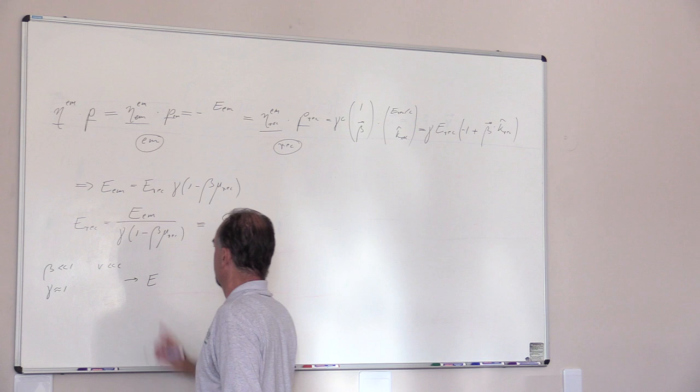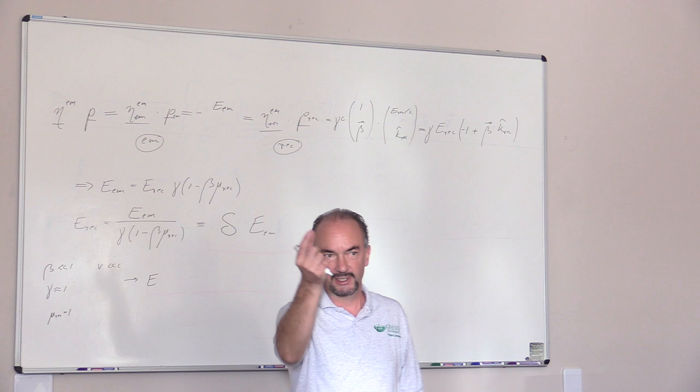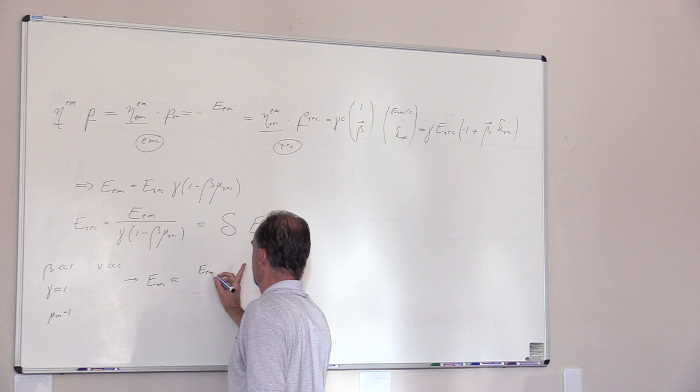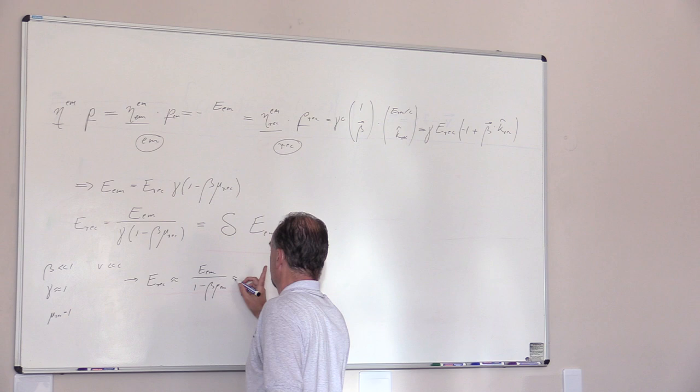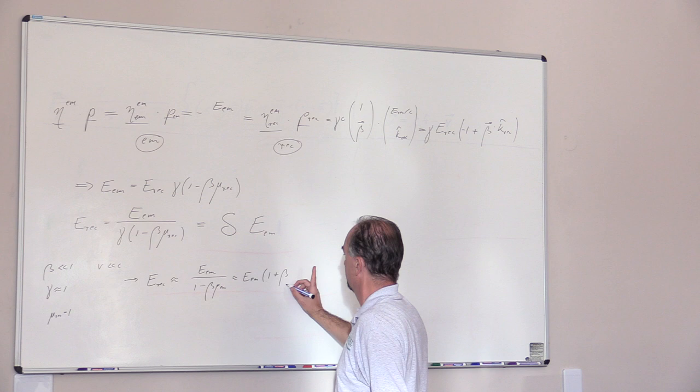So in that case, let's just look at the forward direction. So it's moving at you at non-relativistic speed. Then the received energy is approximately, if you look at the gamma then, E divided by 1 minus βμ. And the first order expansion, if β is very small, gives you E times 1 plus βμ.